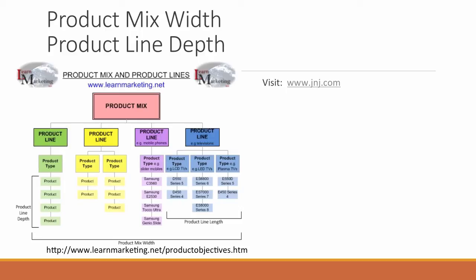Another way to organize product lines might be by the type of buyer — you might have a men's versus a women's product line — or geographically, or a variety of other ways. When we talk about our product mix width, we're talking about the number of product lines we have in our product mix. One way to sell more, which we've discussed before, is product development — developing a new product line targeted to an existing target market, allowing you to sell more.